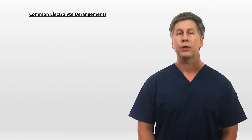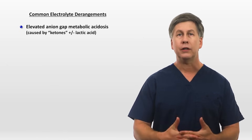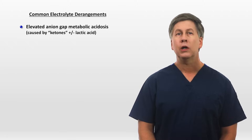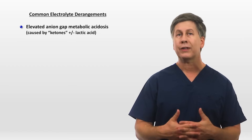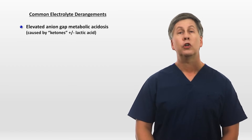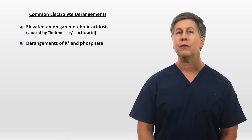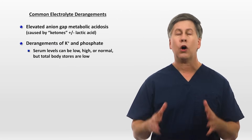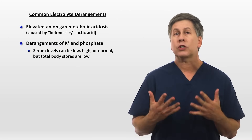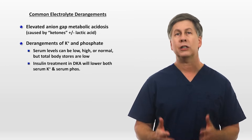Concurrent electrolyte derangements are common in DKA. A hallmark feature is the elevated anion gap metabolic acidosis, attributed to ketones, but depending on the trigger, there is the potential that a lactic acidosis could also be contributing. Derangements of potassium and phosphate are very, very common, though potassium is the larger concern. Serum levels of either can be low, high, or normal, but total body stores will always be low. Insulin treatment in DKA will lower both serum potassium and phosphate due to transmembrane shifts.